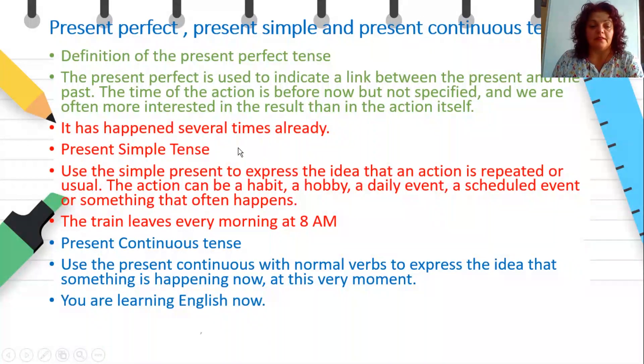Present Simple Tense. We use Present Simple to express the idea that an action is repeated or usual. The action can be a habit, a hobby, a daily event, a scheduled event, or something that often happens. Look at this example: the train leaves every morning at 8 AM, which means that happens every day.